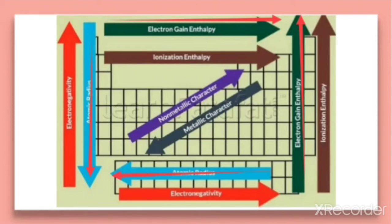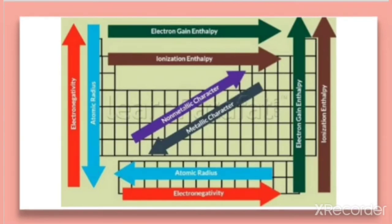Regarding electronegativity, halogens show the greatest electronegativity, meaning they have the greatest tendency to attract the shared pair of electrons. The elements on the right-hand side are more electronegative.